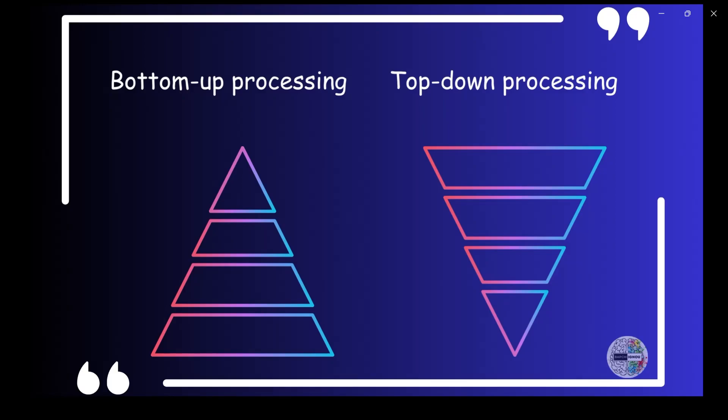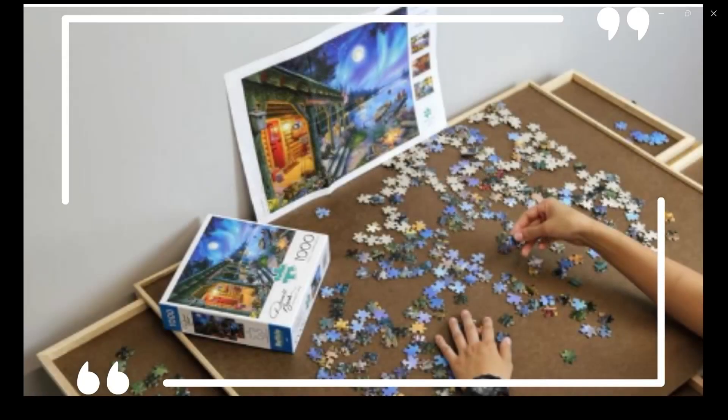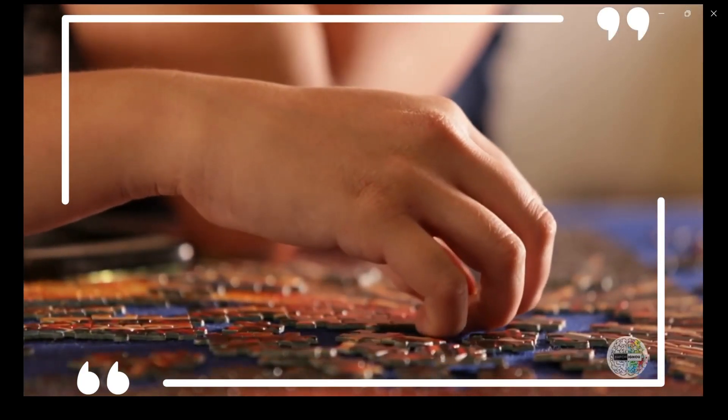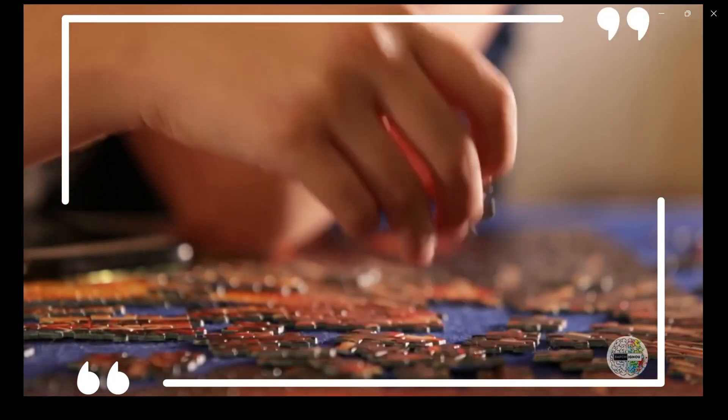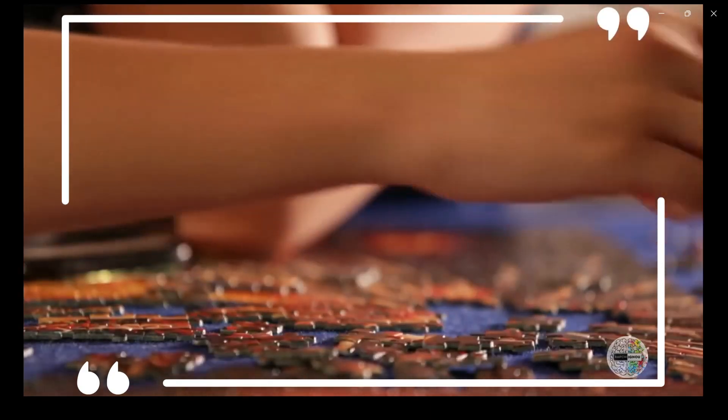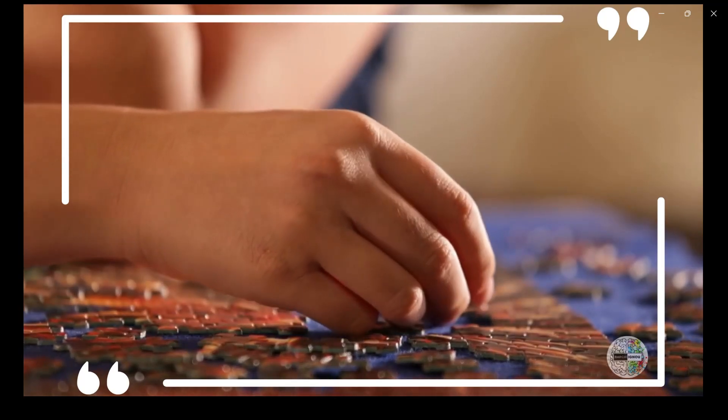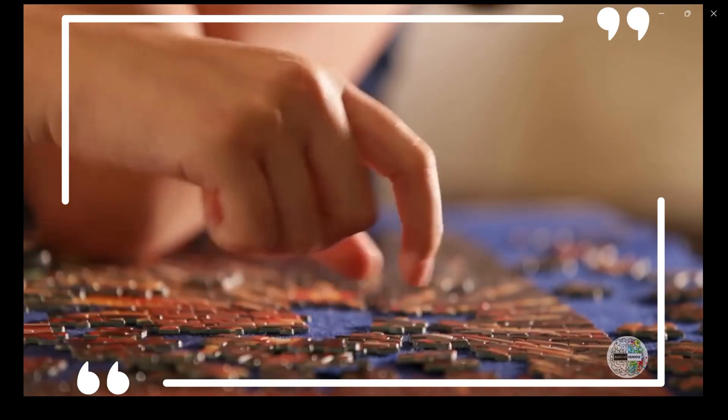Top-down processing. Imagine you have a puzzle, but you have seen the picture on the puzzle box before. With top-down processing, your brain uses your existing knowledge and expectations to help you solve the puzzle. It starts with your brain's top, your prior knowledge, and works its way down to understand what you see. In perception, this means that your brain uses what it already knows to make sense of what you're experiencing. It's like when you hear a familiar song in the distance and recognize it because you know the tune.